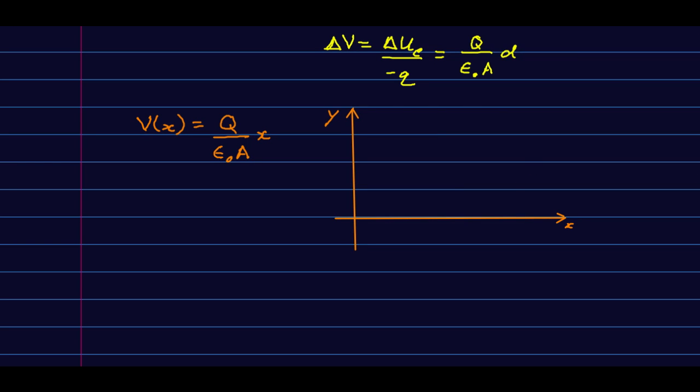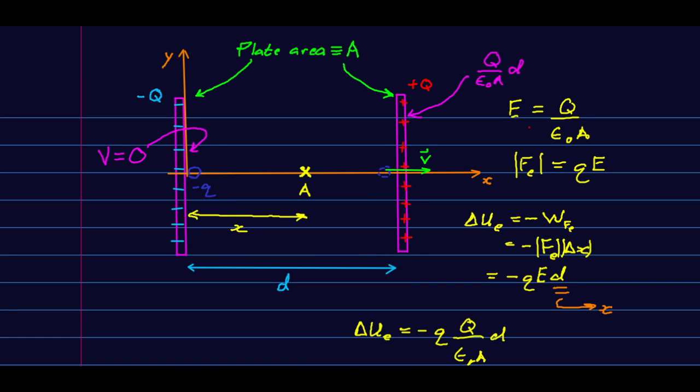If we graph that, we know that we set the potential to be zero at x equals zero. And it rises, and we know that out here at d, the potential is Q over epsilon naught A, d. So we know that much. But then in between, it's just this function. And look, it's an x to the power of one. So that's a linear function. And so our potential as a function of position inside a parallel plate capacitor is just a straight line with a slope there. The slope is Q over epsilon naught A. Oh, hey, look, that just happens to be the electric field strength.